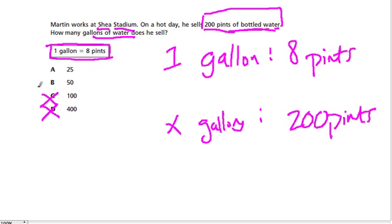100 wouldn't work as well. So now once you've eliminated C and D, you have a 50% chance of just guessing the right answer, but let's figure this out.